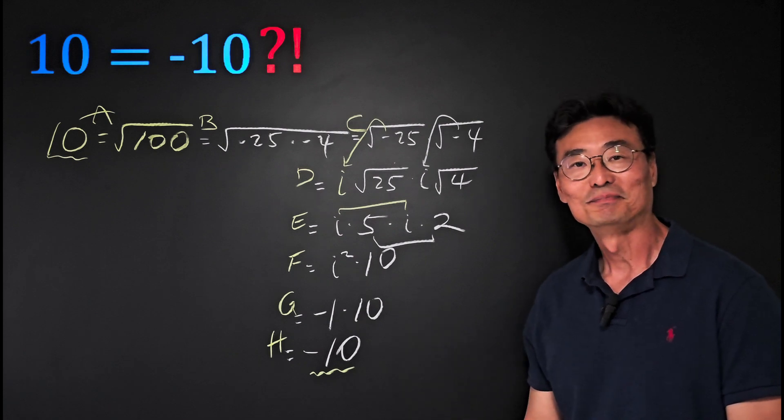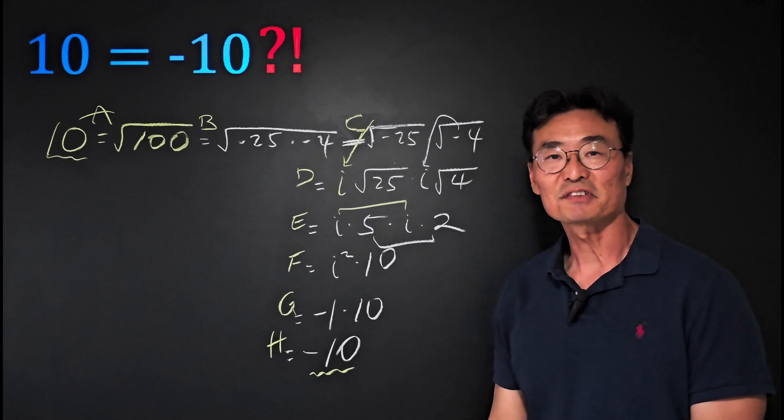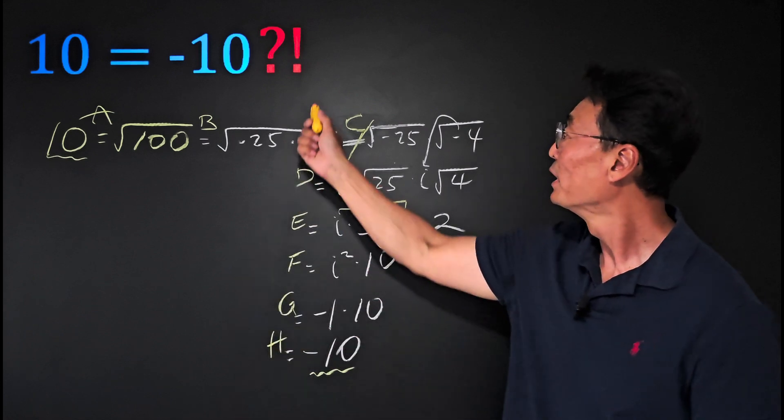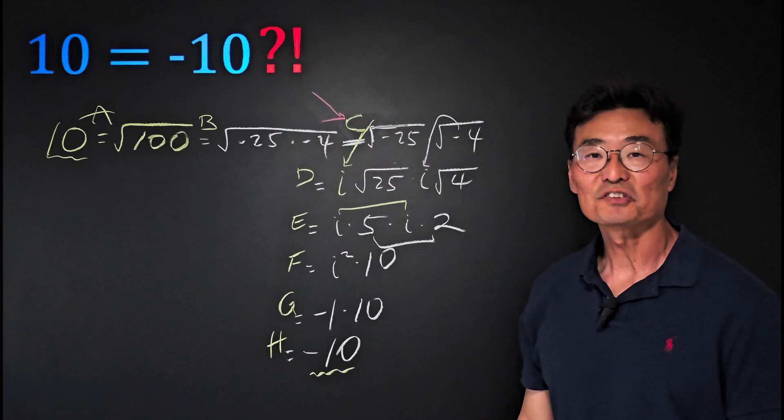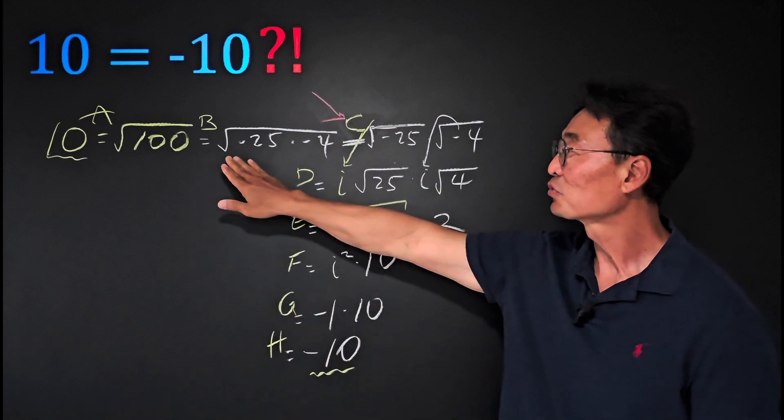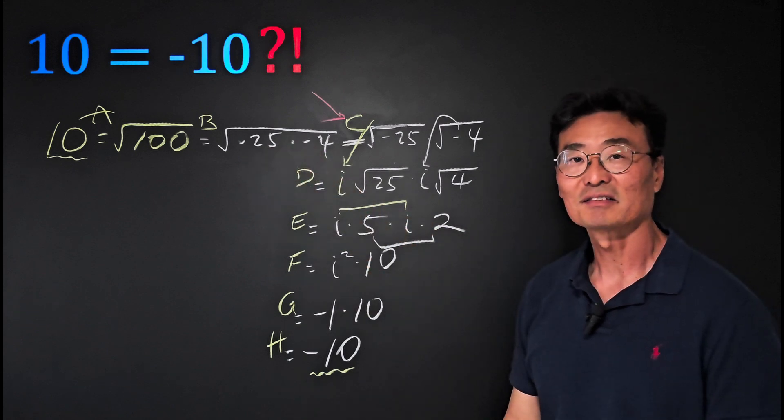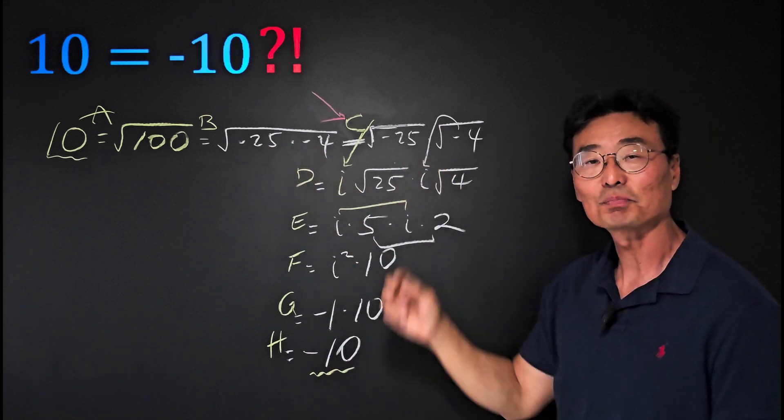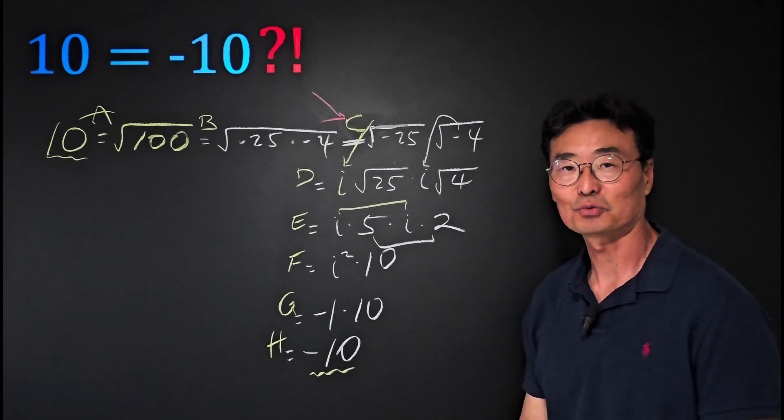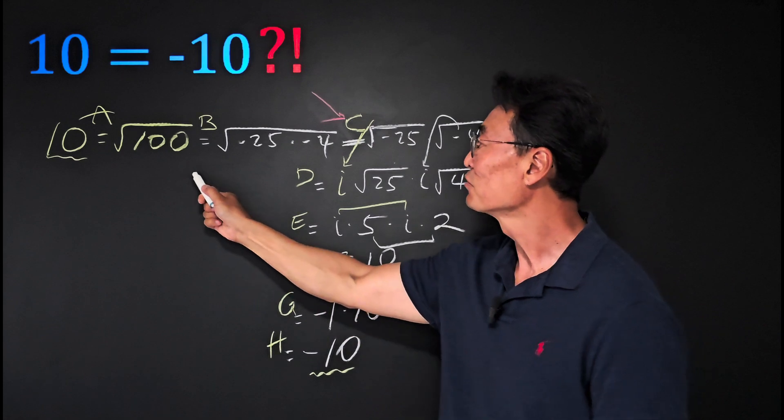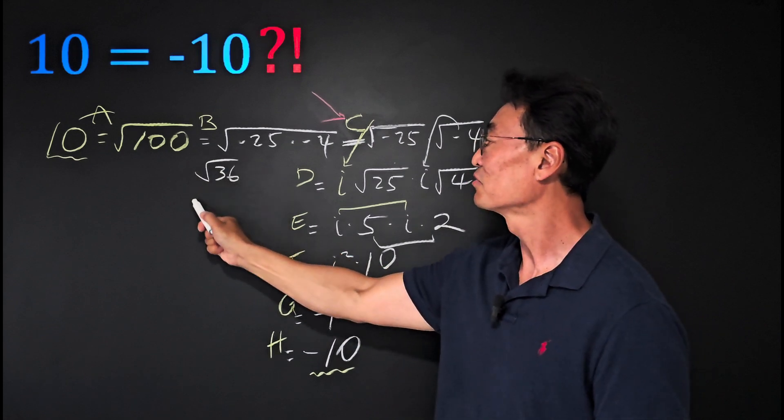So where do you think the mistake happened? I hope you put answer choice C. When you have square root of two negative numbers multiplied like this, you cannot split it into two separate square roots.